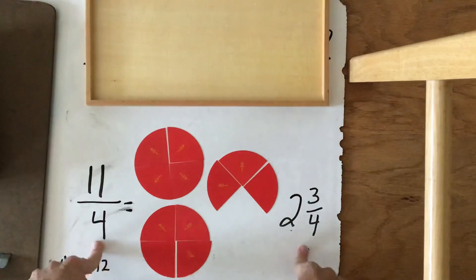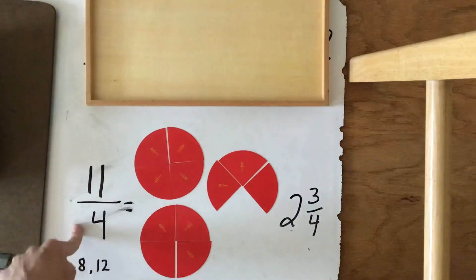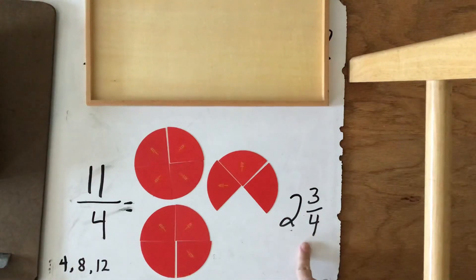So these fractions, we could say, are equivalent. This is the improper fraction. This is the mixed number. But they equal the same thing. We just want to write our answers in mixed number form. Thanks for joining me at this review.